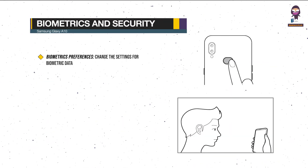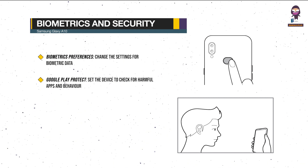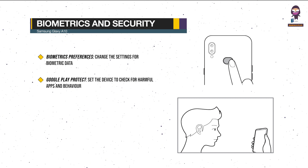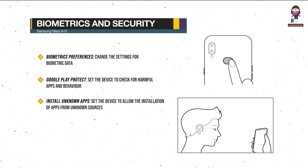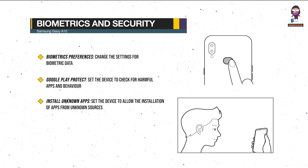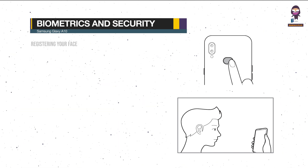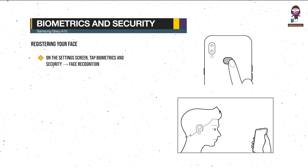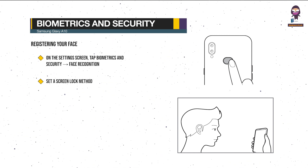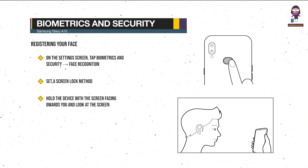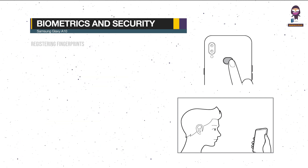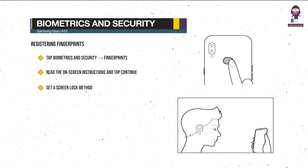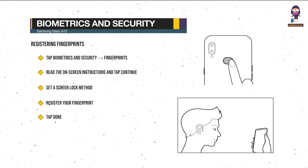Biometrics and Security — Biometrics preferences: change the settings for biometric data. Google Play Protect: set the device to check for harmful apps and behavior and warn about potential harm and remove them. Install Unknown Apps: set the device to allow the installation of apps from unknown sources. Encrypt SD Card: set the device to encrypt files on a memory card. Registering your face: on the Settings screen, tap Biometrics and Security, Face Recognition. Read the on-screen instructions and tap Continue. Set a screen lock method, select whether you are wearing glasses or not and tap Continue. Hold the device with the screen facing towards you and look at the screen — position your face inside the frame. Registering fingerprints: on the Settings screen, tap Biometrics and Security, Fingerprints. Read the on-screen instructions and tap Continue. Set a screen lock method. Register your fingerprint. When you are finished registering your fingerprints, tap Done.